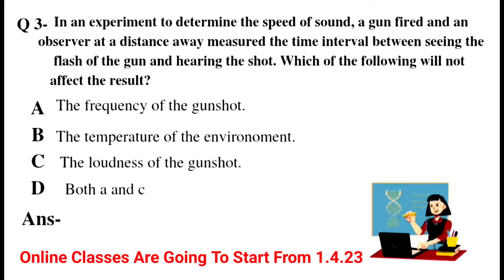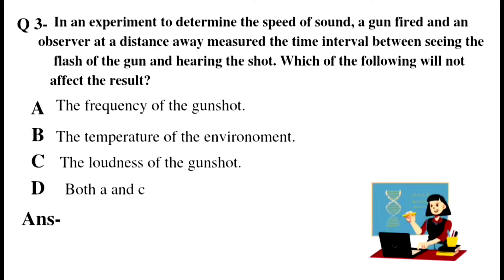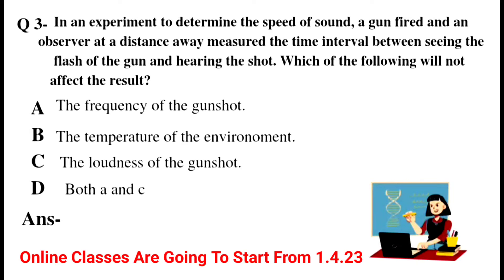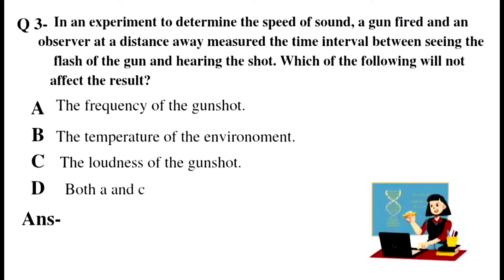Question number 3: In an experiment to determine the speed of sound, a gun is fired and an observer at a distance measures the time interval between seeing the flash of the gun and hearing the shot. Which of the following will NOT affect the result? Option A: frequency of the gunshot, Option B: temperature of the environment, Option C: loudness of the gunshot, Option D: both A and C.